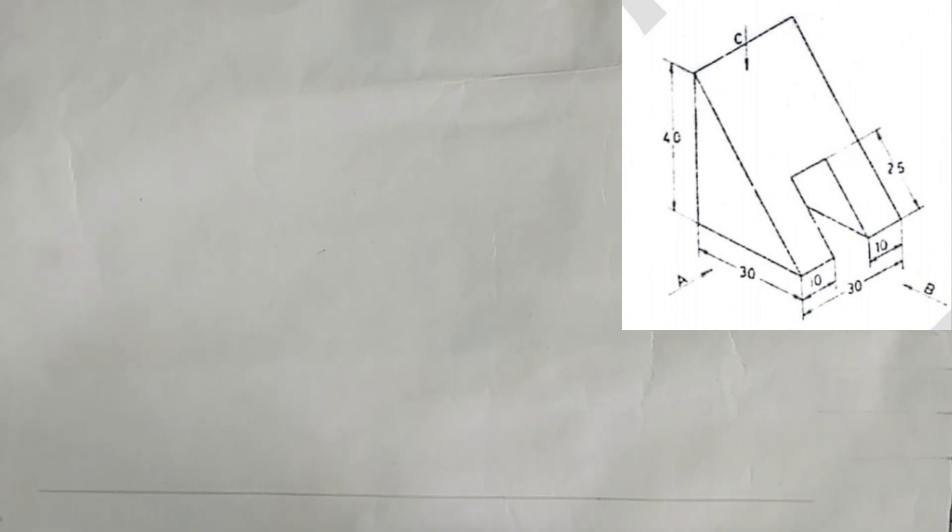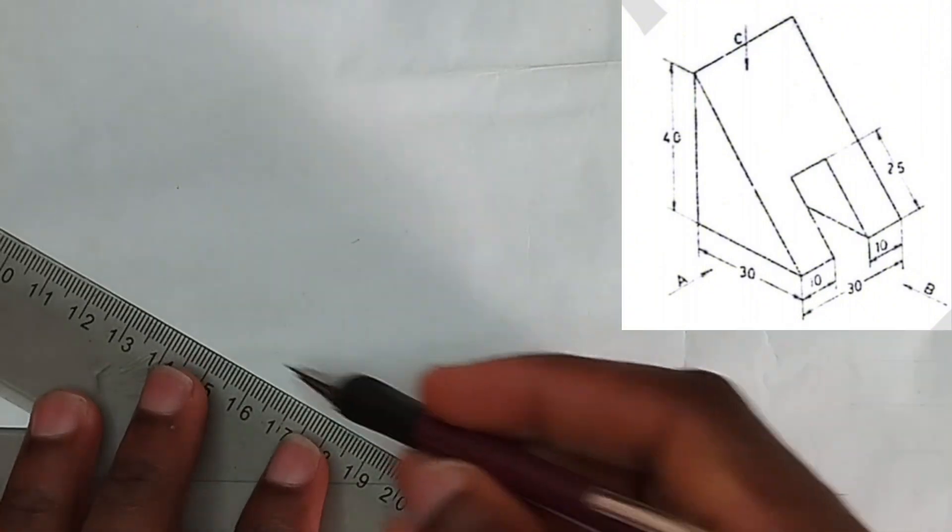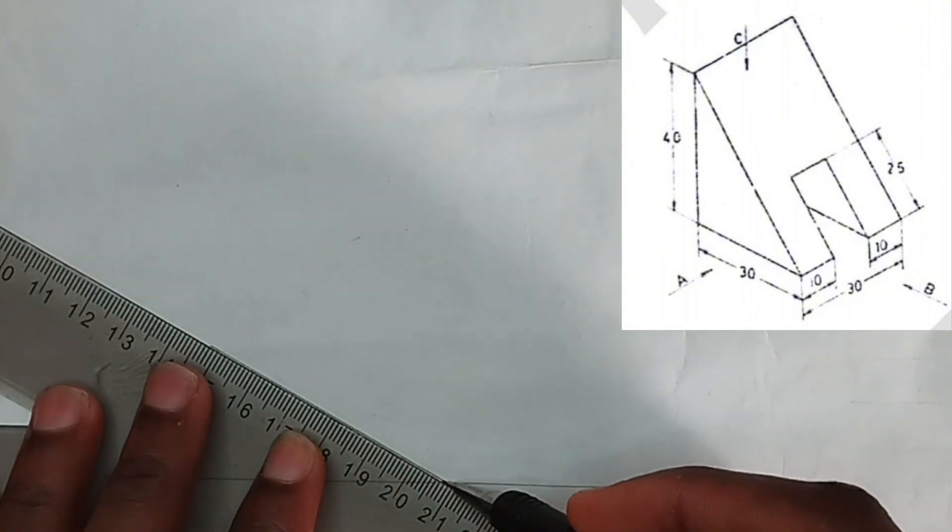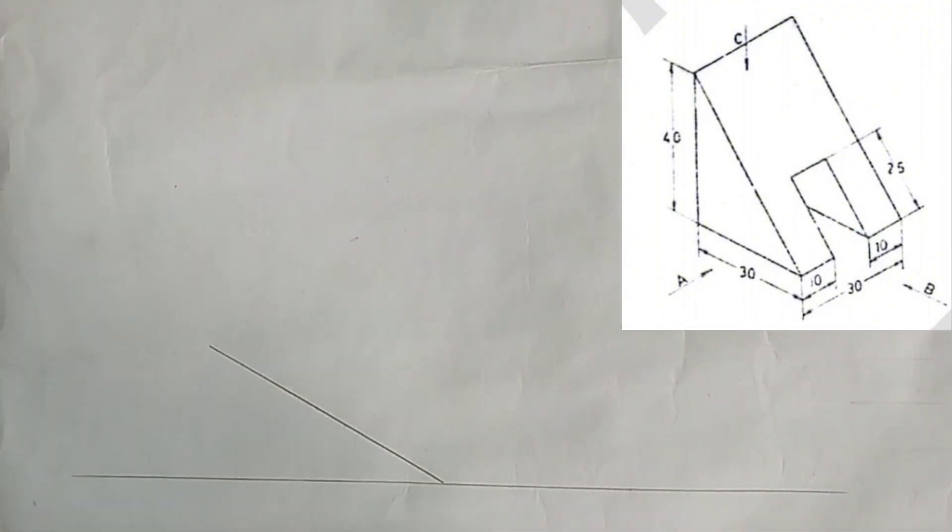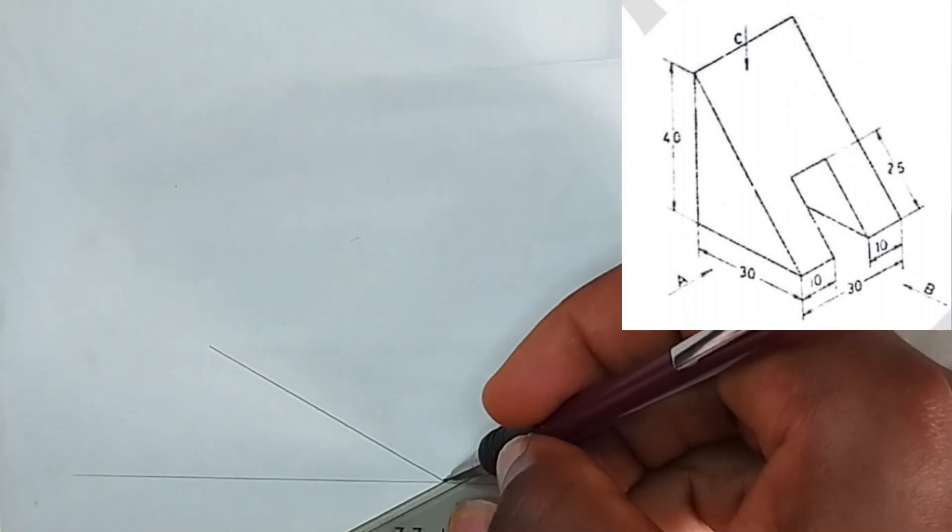So we pick our straight line, that's our reference line. From that point we draw our 30 degree to the left hand side, then we draw a 30 degree also to the right hand side. Make sure you are using thin lines please.